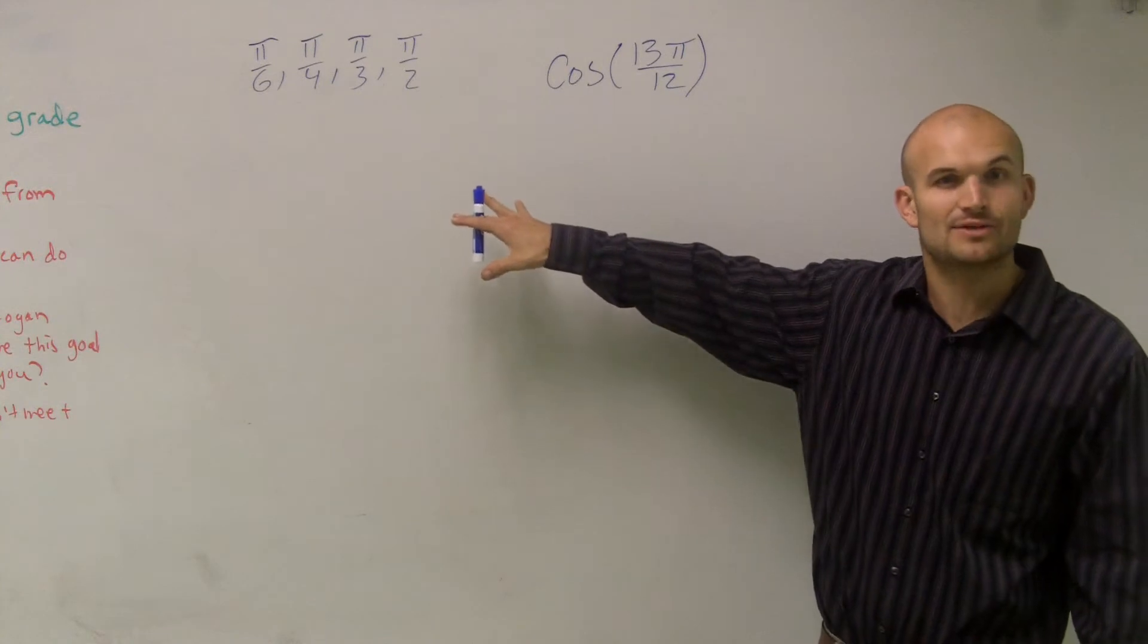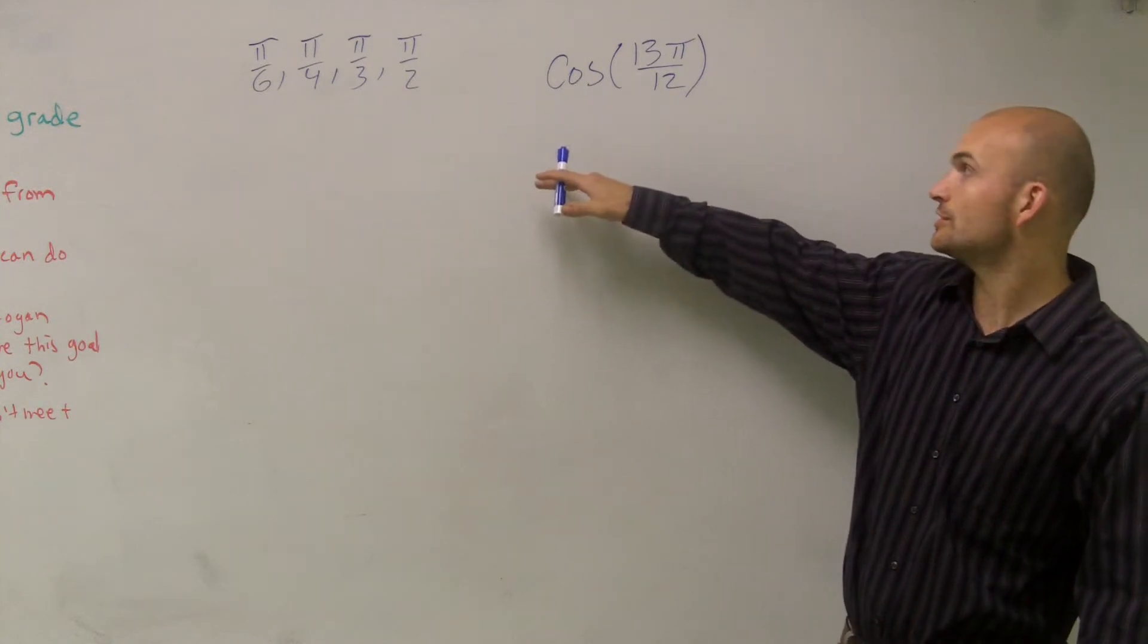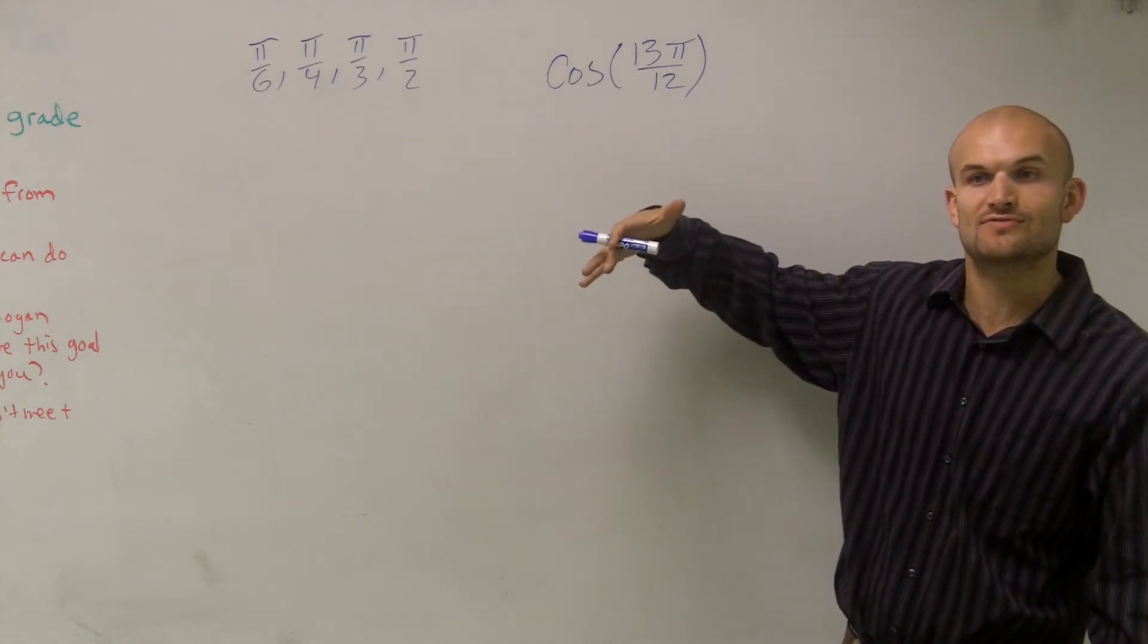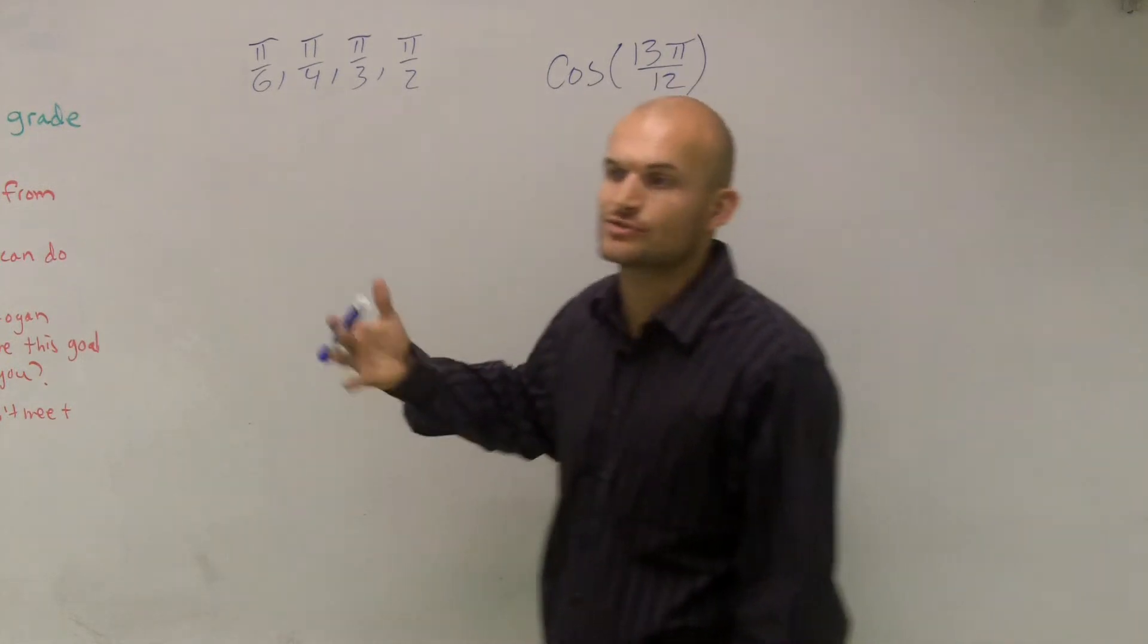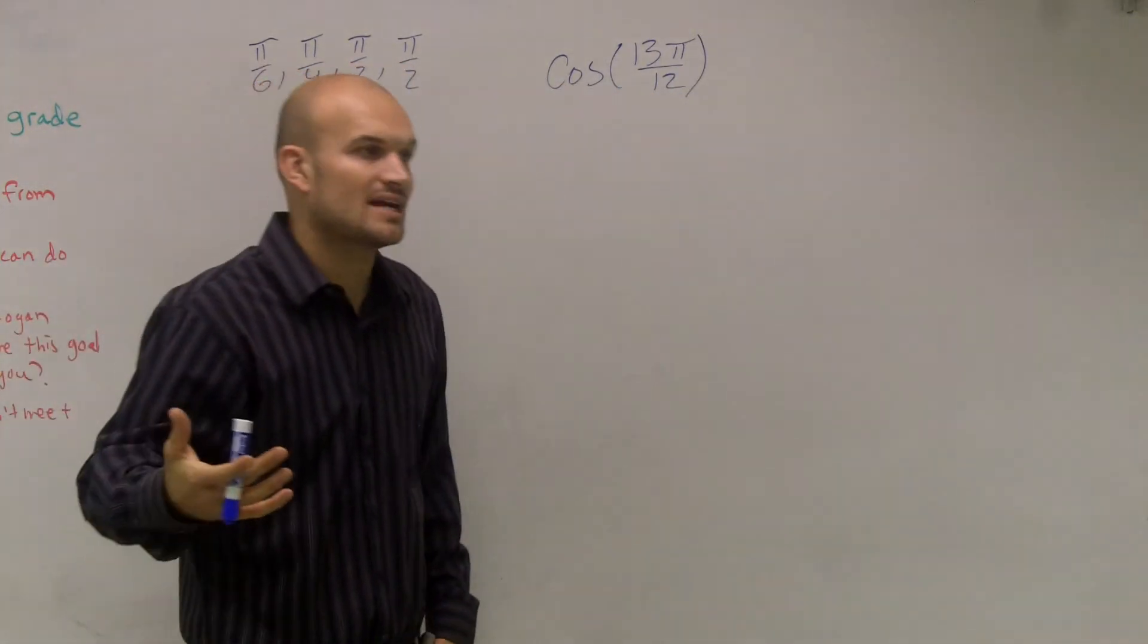But to find the exact value, I have to use the unit circle and see if I can use those values. Well, for 13π over 12, I can't use any coordinates on the unit circle that are going to give me exact values.